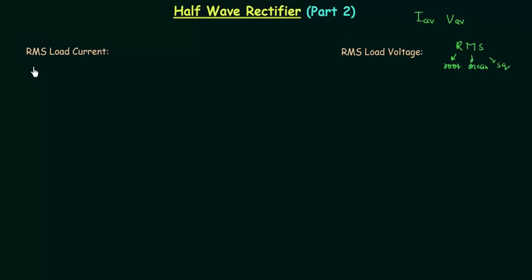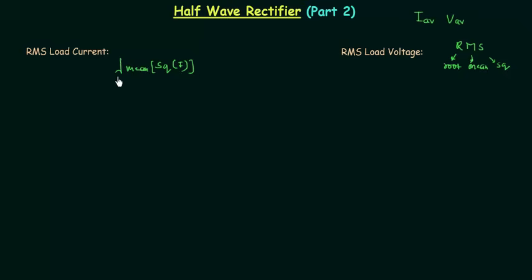So we have to calculate the root mean square value of load current and root mean square value of load voltage. We will first calculate the square of load current — let's say load current is I. So first we will calculate the square of I, then we will calculate the mean of I squared, and finally we will calculate the square root.